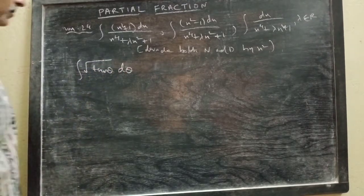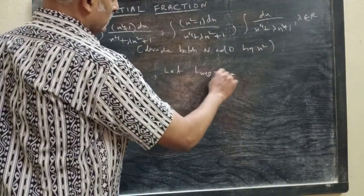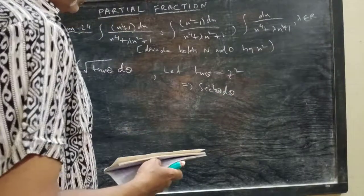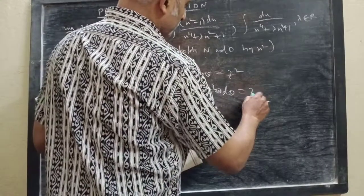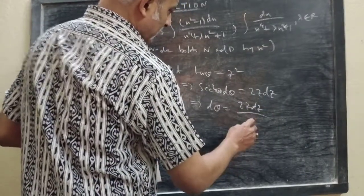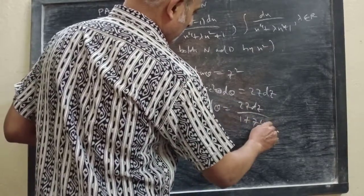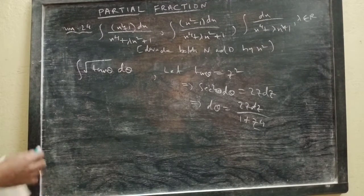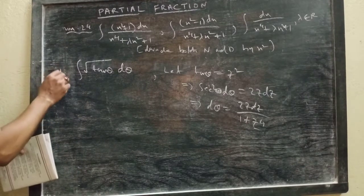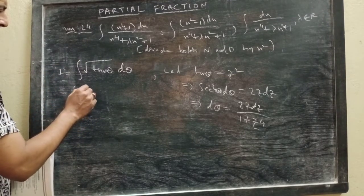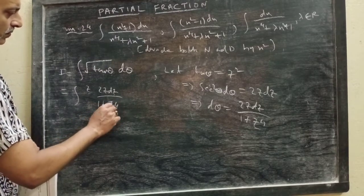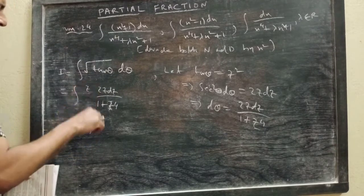Here you have to substitute: let tan θ = z². That will imply sec²θ dθ = 2z dz, so dθ becomes 2z dz by sec²θ, that is 1 + tan²θ, that is 1 + z⁴. So your integral now becomes √(tan θ), that is z, and dθ is 2z dz by 1 + z⁴.